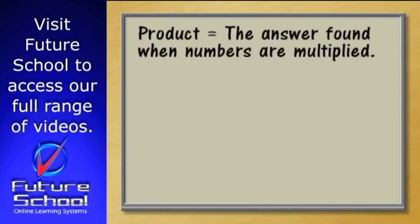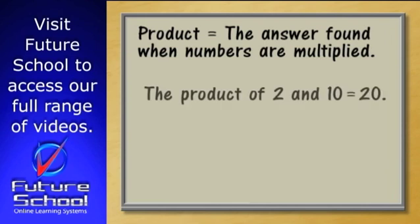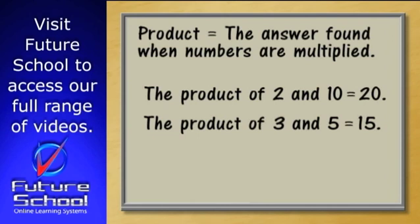Product is the answer found when numbers are multiplied together. For example, the product of two and ten is twenty. And if three times five equals fifteen, then we can say that the product of three and five is fifteen.